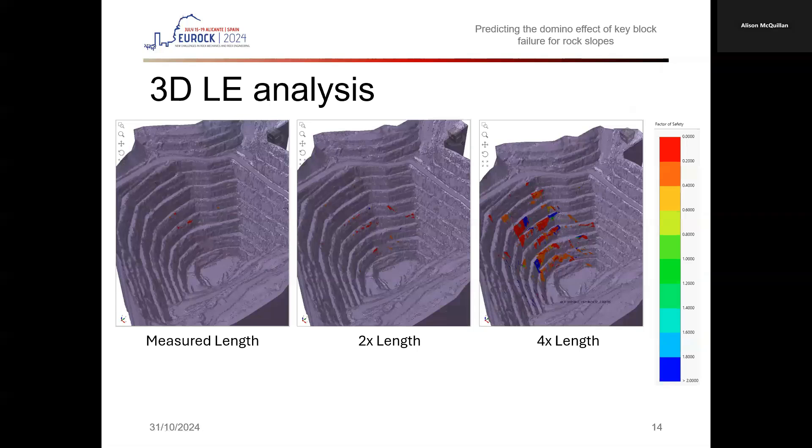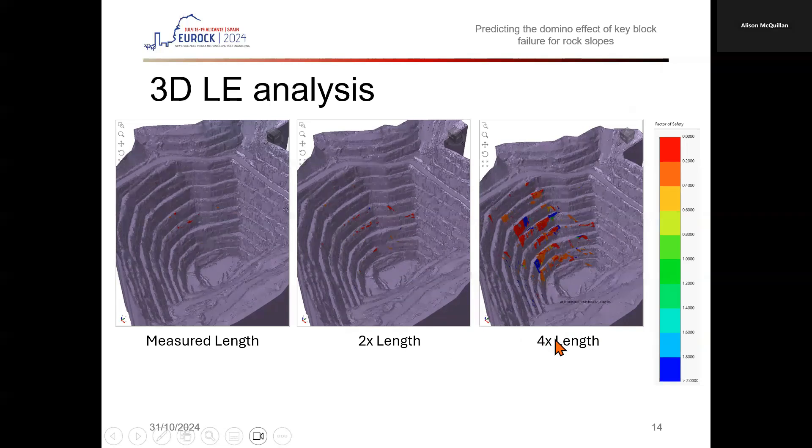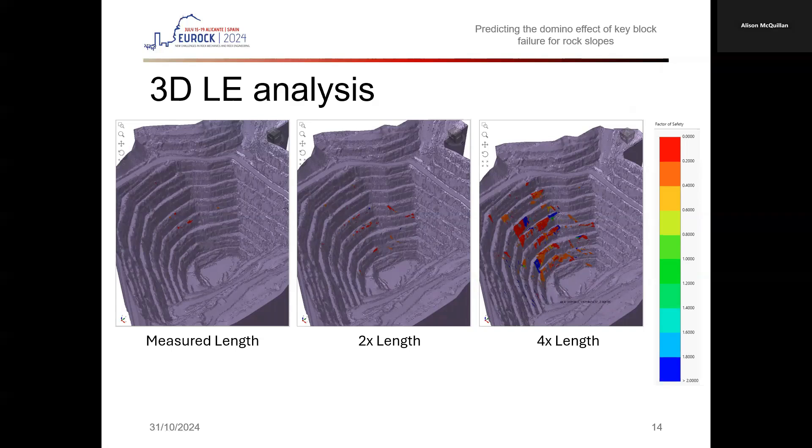Using RockSlope 3, a 3D LE modelling code, I can readily analyze the potential for structure failure of defects that are actually mapped to intersect per the measured length scenario. I can also complete sensitivity analysis by doubling and doubling again the mapped persistence in the center and left scenarios to determine the change in size and location of potential block falls to account for the underestimation of persistence in this data set.